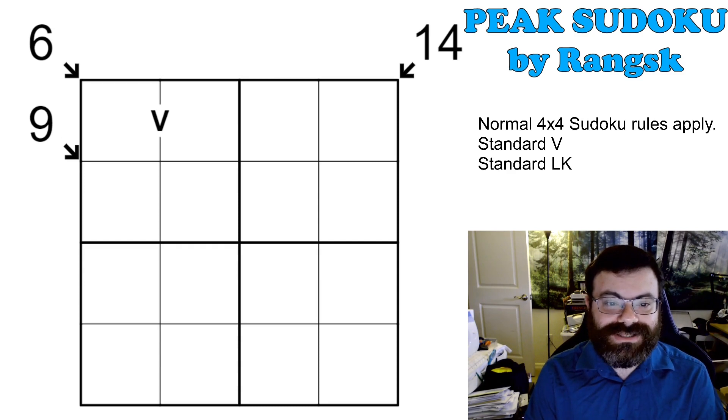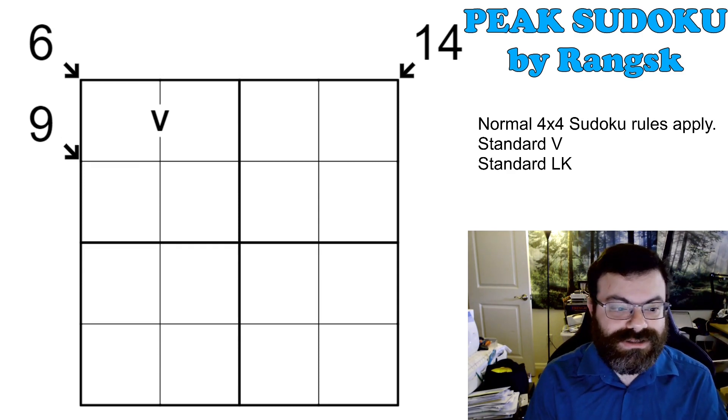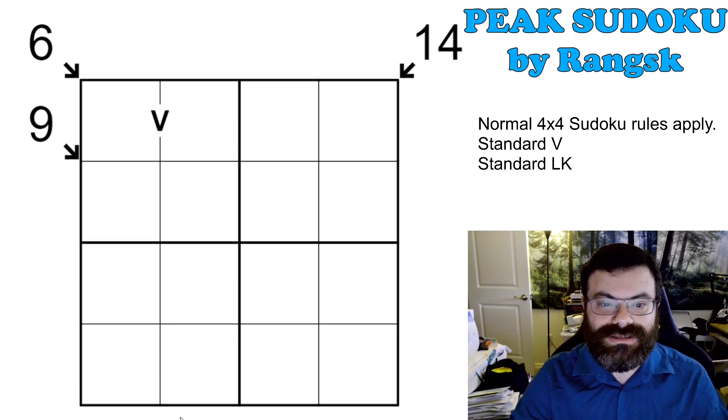So go ahead and check the link below if you want to try it. I'm going to go over the rules. The first rule is it's 4x4 Sudoku, so you place the digits 1 through 4 in every row, column, and 2x2 box.